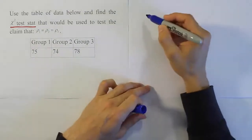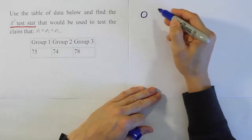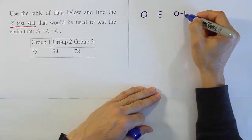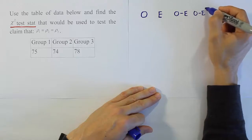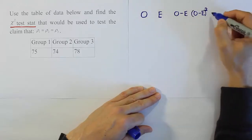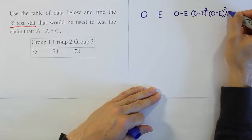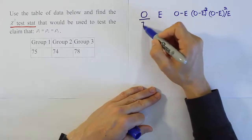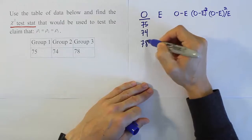The best way to work out a problem like this is to create columns. So if you're going to be doing it by hand, you should do an observed column, an expected column, then an observed minus expected, then an observed minus expected squared, then you'll have an observed minus expected squared divided by expected. So these are going to be the columns that we create. Let's fill in the observed column. To fill in the observed column, you just copy down the numbers you see in the table: 75, 74, 78.